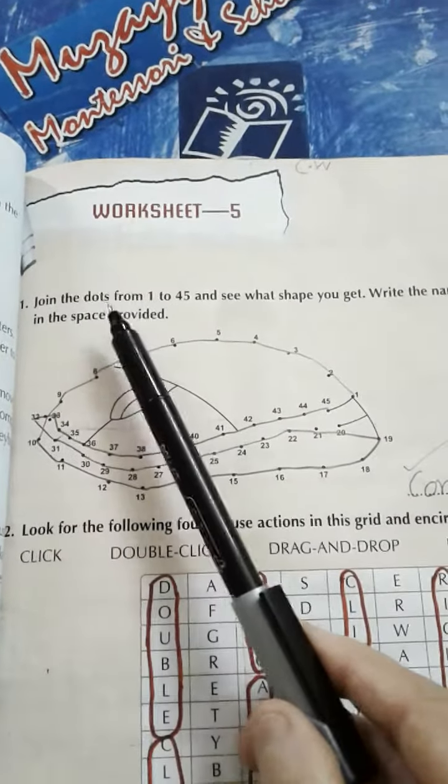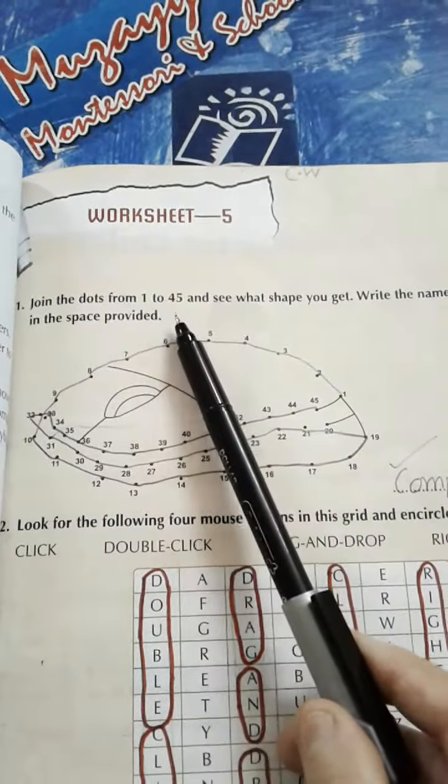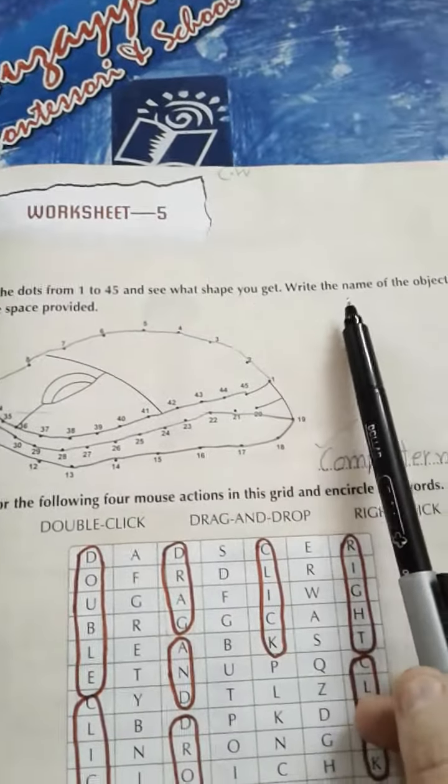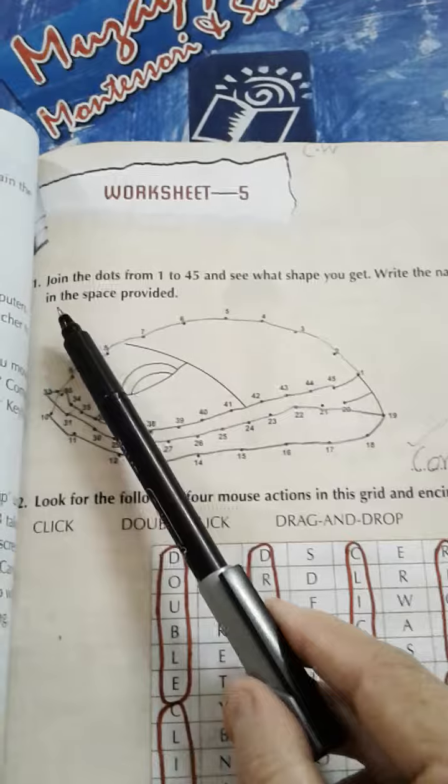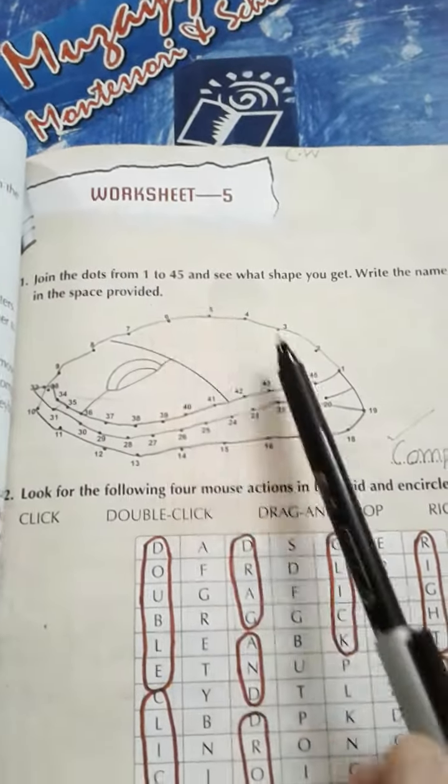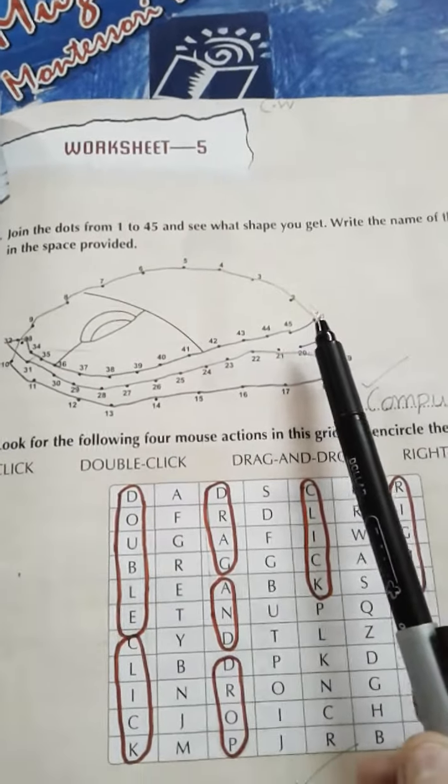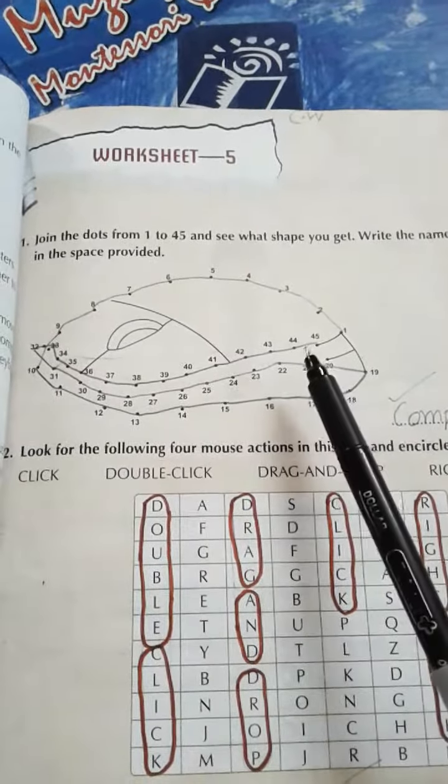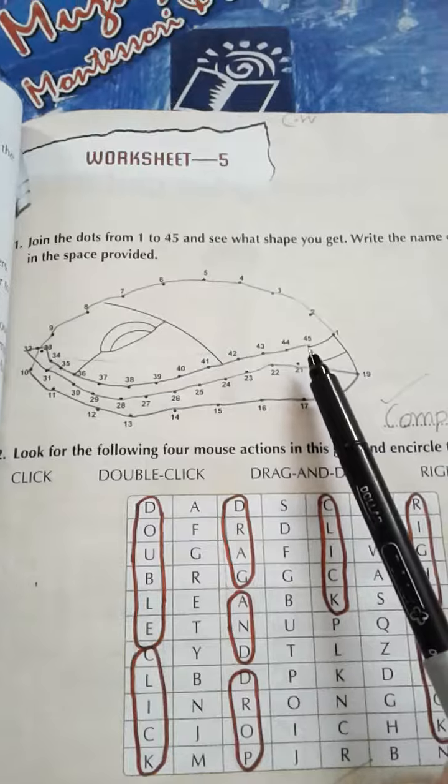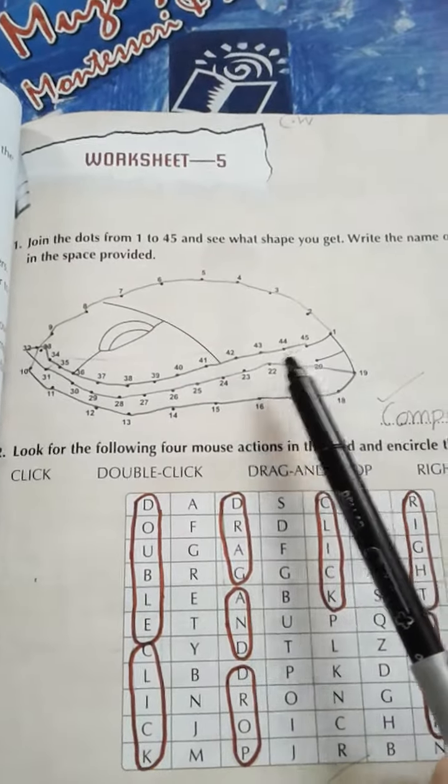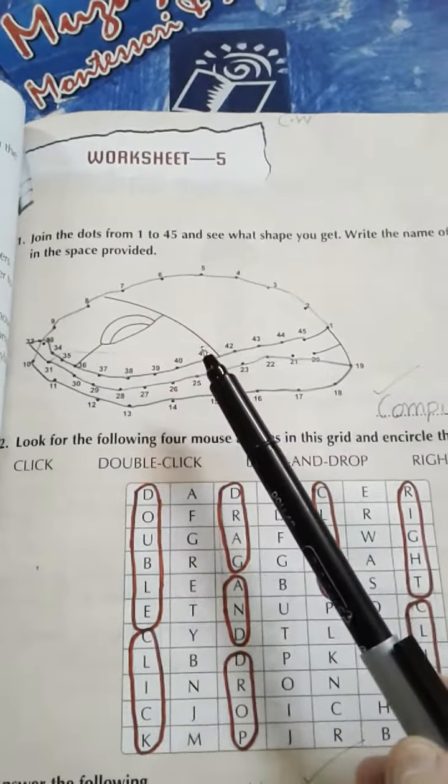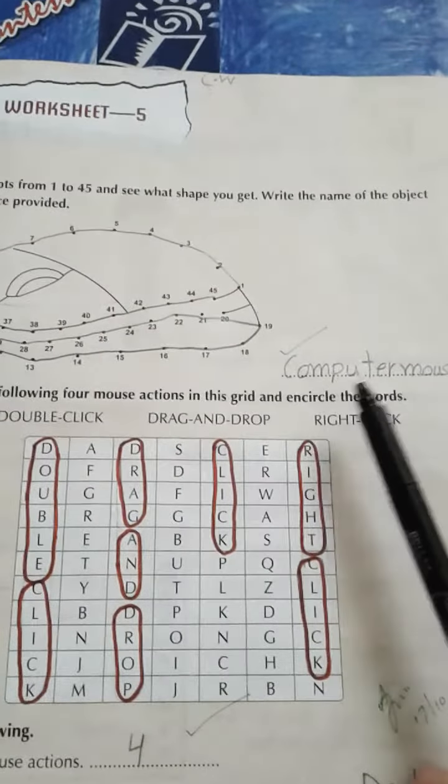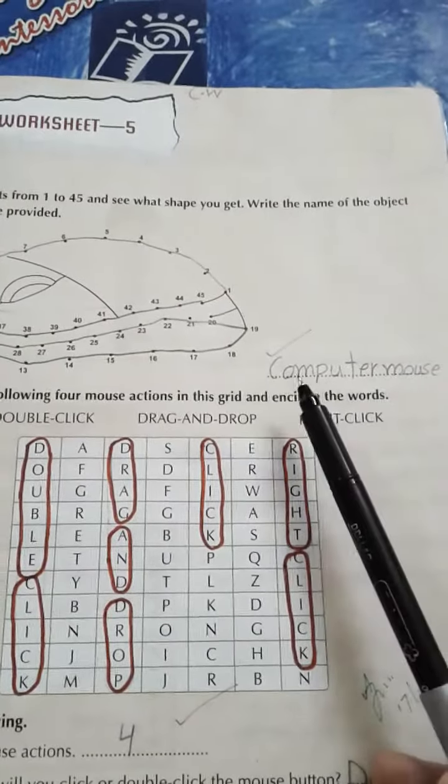Question number 1: Join the dots from 1 to 45 and see what shape you get. Write the name of the object in the space provided. You have to start from 1 and join the dots until 45, then see which shape you get and write that object name in the space.